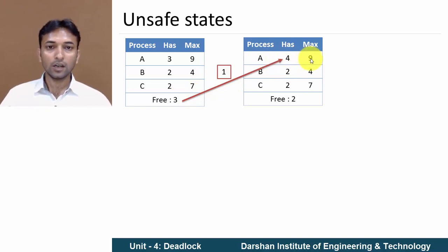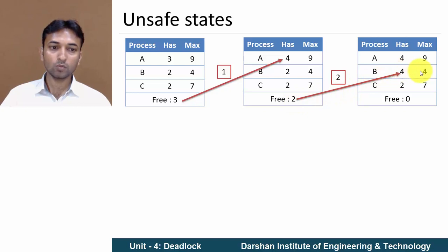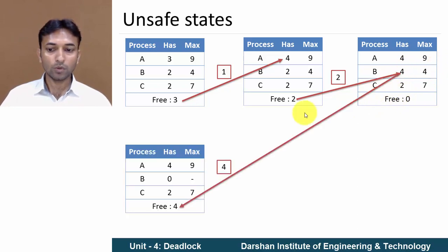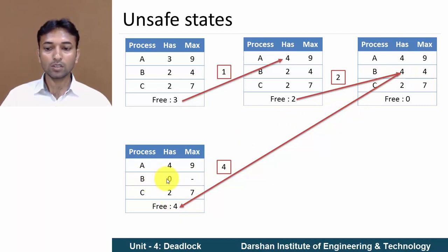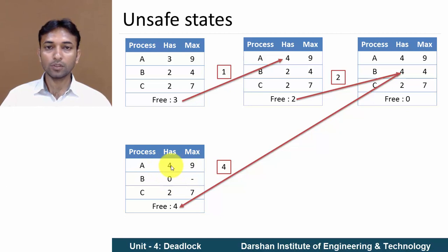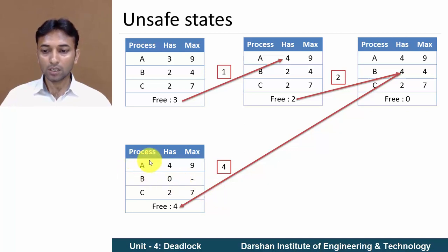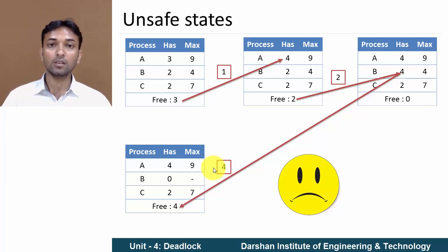Now A requires 9 minus 4 = 5 resources — not available. B requires 4 minus 2 = 2 resources — available. So 2 resources are allocated to B, and B completes its execution. Once B finishes, all 4 resources become free. Now A requires 5 resources but only 4 are free — 5 resources are not available. C requires 5 resources but also not available. So neither process A nor C can proceed further. The system is deadlocked. This state is known as unsafe state.